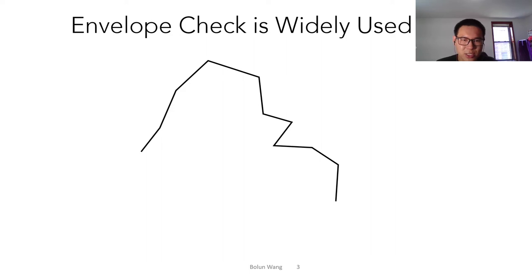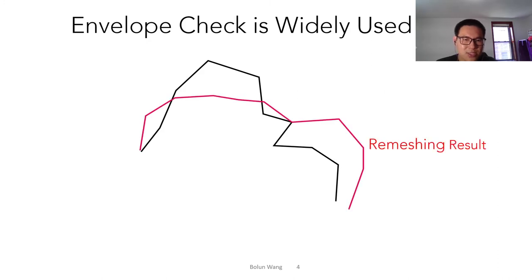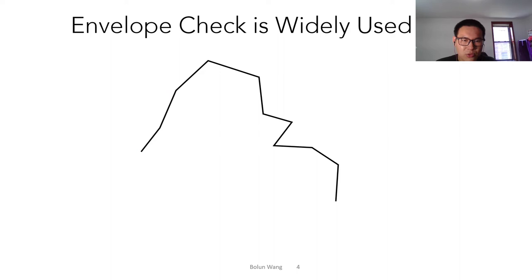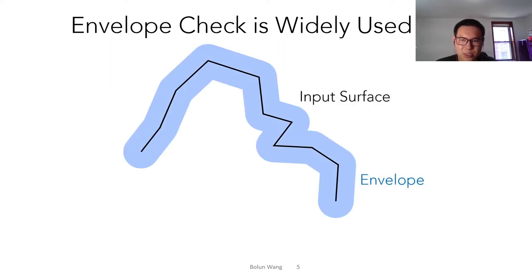This is an illustration of an input surface in 2D, and we want to remesh it. The right surface is the remesh result. We can see that the remesh result doesn't fit the input surface very well, so we don't want to accept a result like this. To avoid this problem, we can build an envelope around the input surface and check if the remesh result is inside of the envelope or not.